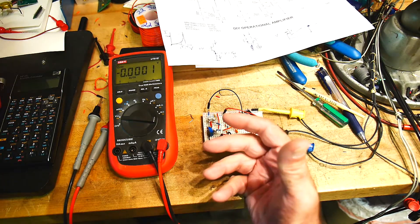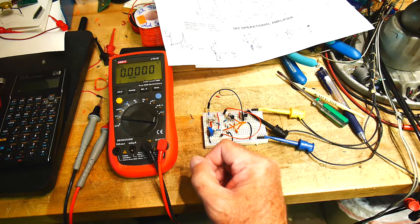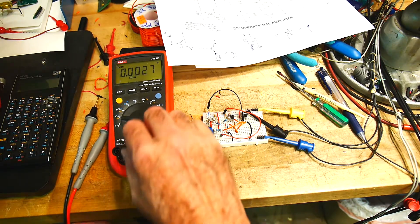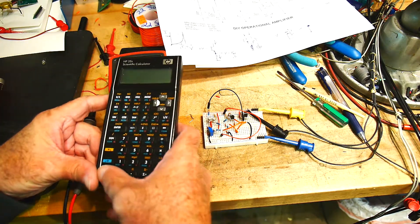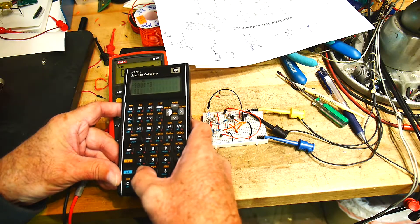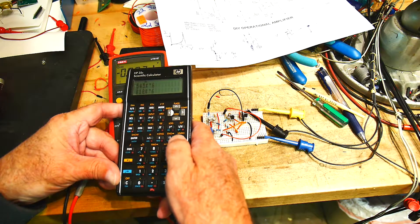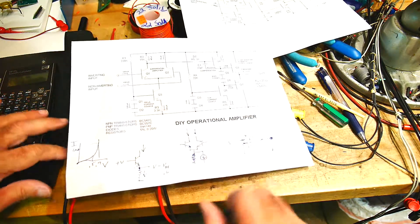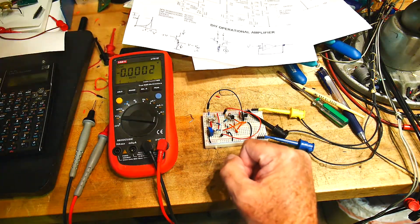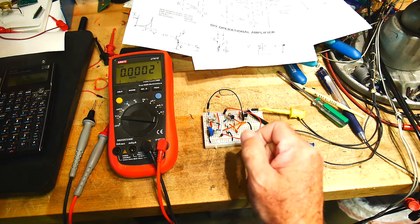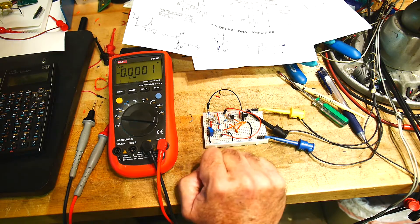We have about a volt. We're measuring around 900 millivolts or something. Let's see with a calculator. We have 0.9 volts and 1100 ohms, so we have 800 microamps flowing in that resistor, and everything seems to be zeroed out now.